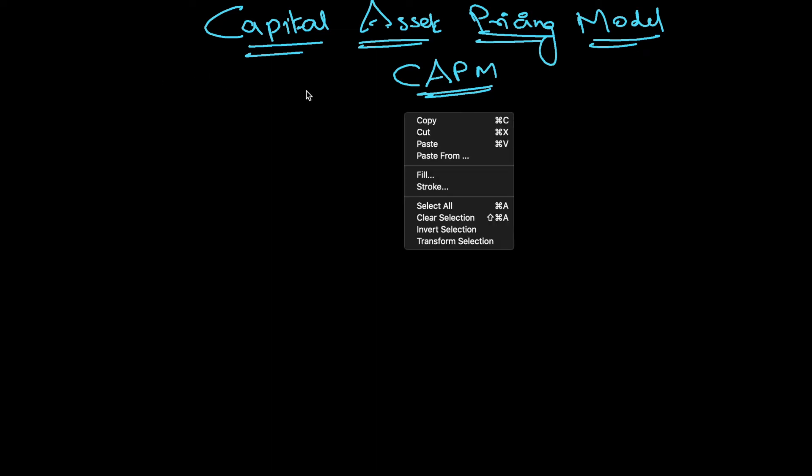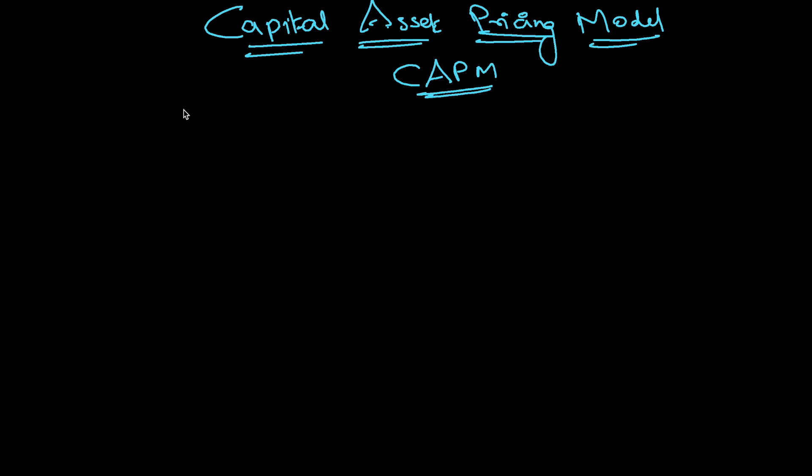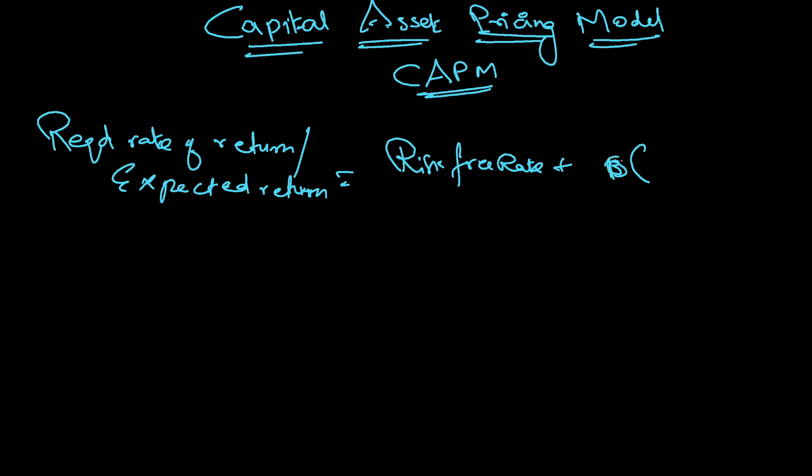So Capital Asset Pricing Model. As per CAPM method, how do we find out the required rate of return or the expected return? The formula goes like this: risk-free rate plus beta into return from the market minus risk-free rate.